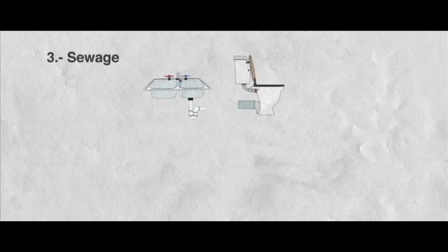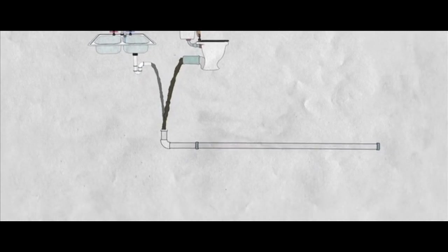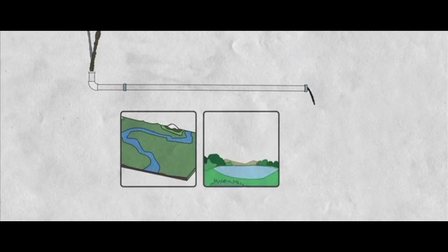Three, sewage. The sewage systems around the world are inefficient. Normally we don't separate grey from black water, and in most places there aren't any water treatment plants, so it goes directly to rivers, lakes and the sea.